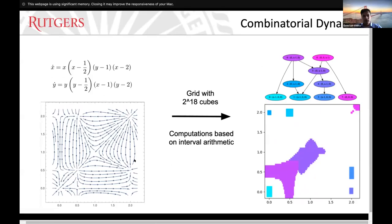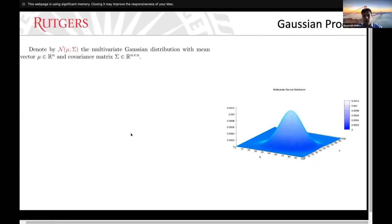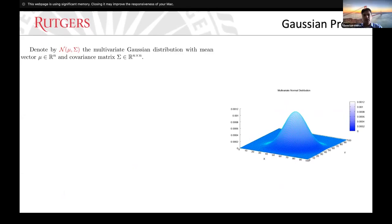Now suppose we do not know this flow — we are only going to have a sample of that flow. How to get the global dynamics with only a sample? For that, I first need to talk about the Gaussian process, because we need to put a surrogate model built from the data.